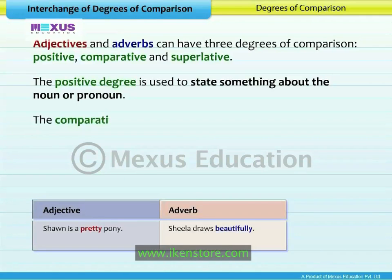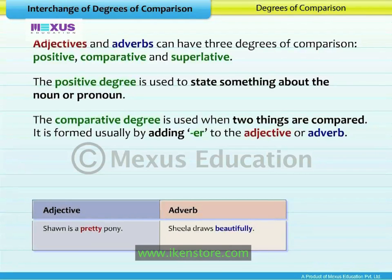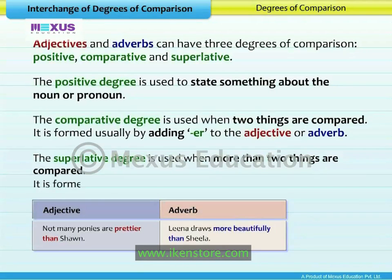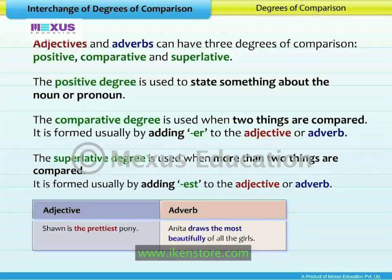The comparative degree is used when two things are compared. It is formed usually by adding -er to the adjective or adverb. For example: Not many ponies are prettier than Sean. The superlative degree is used when more than two things are compared. It is formed usually by adding -est to the adjective or adverb. For example: Sean is the prettiest pony. Anita draws the most beautifully of all the girls.